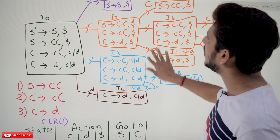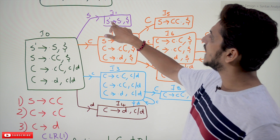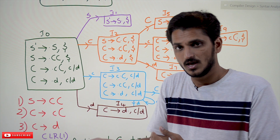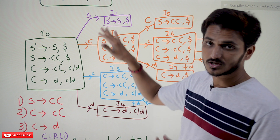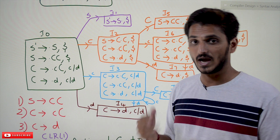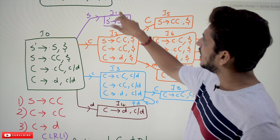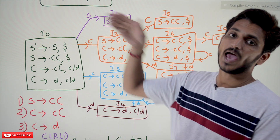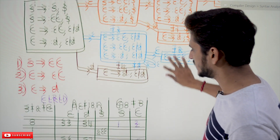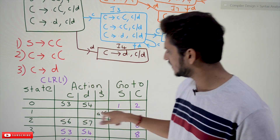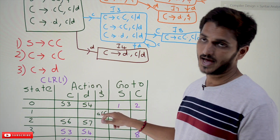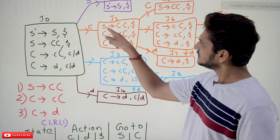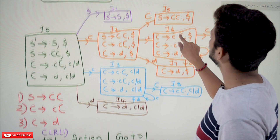For item S' tends to S dot — dot is present after S, but this is a special augmented production. On state i1, if you see the dollar symbol, we are accepting the input. So on state 1 at dollar, write Accept.